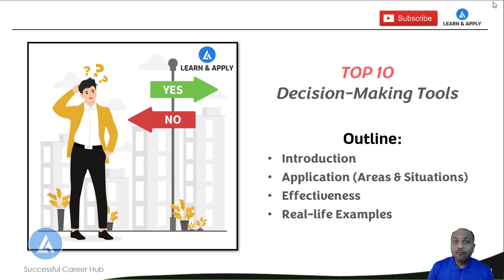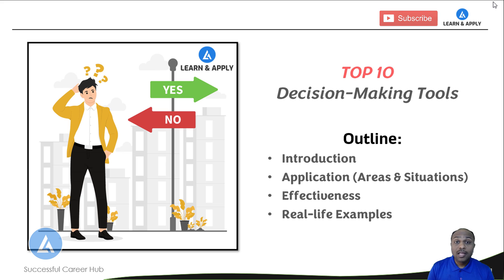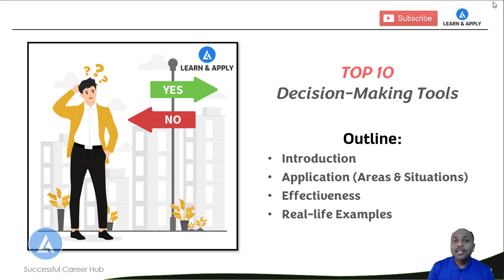This outline consists of four important elements. The first one is introduction. The second one is application — that means we are going to understand in which areas and situations we need to use that decision making tool. In the third element, we are going to understand why that tool is effective in that particular situation. And in the fourth part, we will see real life examples in which that particular decision making tool is used.